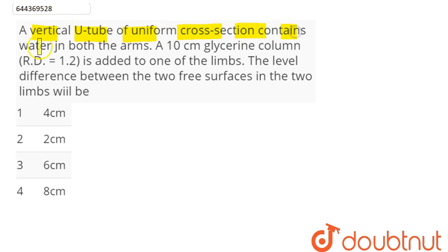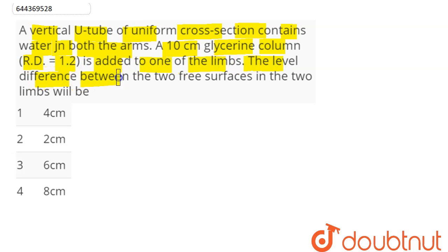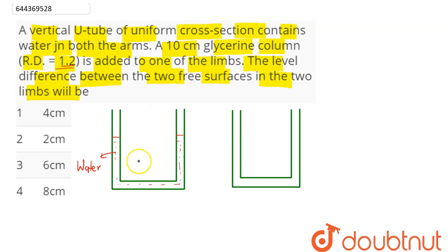The question is: a vertical U-tube of uniform cross-section contains water in both the arms. A 10 centimeter glycerin column with relative density 1.2 is added to one of the limbs. The level difference between the two free surfaces in the two limbs will be?